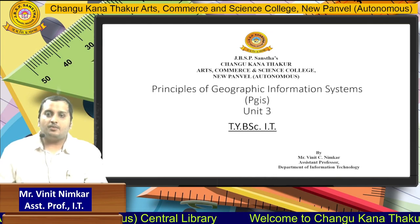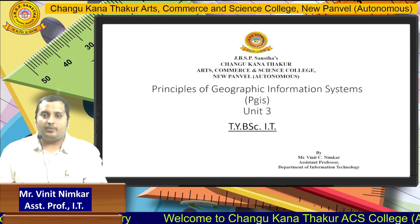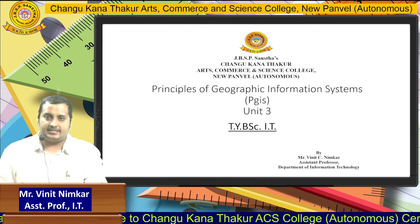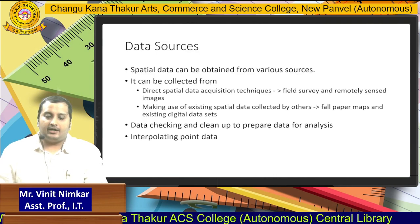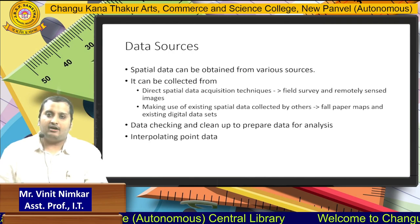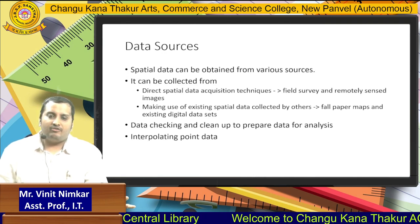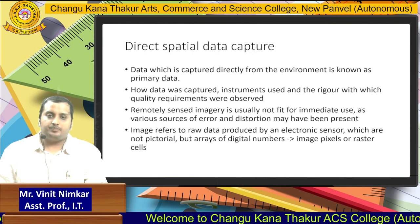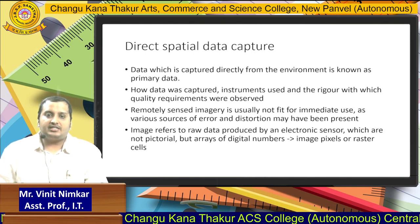Hello learners, my name is Vineet Nimkar. Now we are going to start Unit 3 of Principles of Geographic Information Systems. First we will talk about data sources. Data sources can be either direct or indirect. We can directly capture data from field surveys through sensors and so on, or we can make use of existing data sources which are already available.